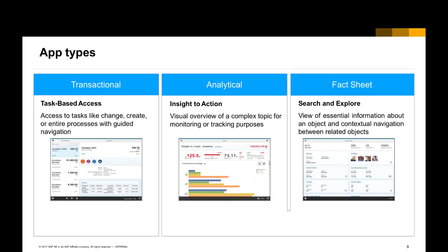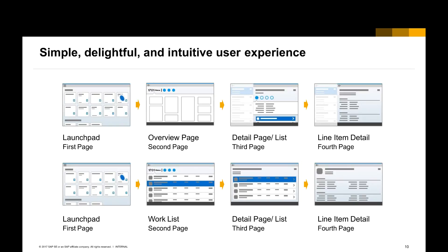There are three types of SAP Fiori apps. First, transactional apps — you can place transactions, change, update, or cancel with guided navigation. Second, analytical apps — these provide a visualized overview of business process information and allow the end user to take further action based on contextual business insight. Third, fact sheets — these allow the end user to search and explore a certain business object with contextual navigation to related objects. Fiori also defines patterns for navigation and interaction to achieve a simple and intuitive user experience.